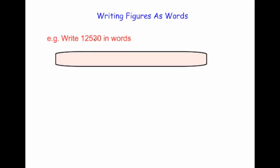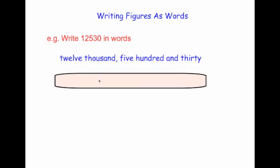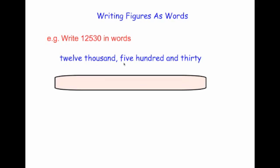Well, let's have a look at the columns. We have got units, tens, hundreds, thousands, ten thousands. So this is 12,530, so again you'd write that as you would say it: twelve thousand, five hundred and thirty.